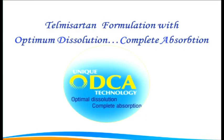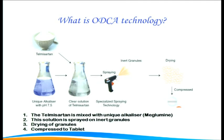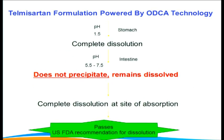One formulation developed indigenously is called ODCA — Optimum Dissolution and Complete Absorption — where telmisartan granules are mixed with a unique alkalizer called meglumine, which is an amino sugar derived from sorbitol with a pKa of 9.6. When mixed with meglumine, it creates a microenvironmental pH around the telmisartan granules. This solution is sprayed on inert granules, dried, and then compressed into tablet form. The product powered by ODCA technology undergoes complete dissolution across the GI system at pH 5.5 to 7.5, does not precipitate, and ensures 100% blood pressure control with improved bioavailability.